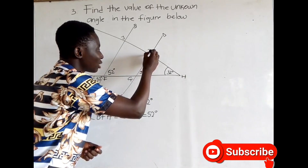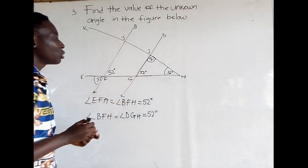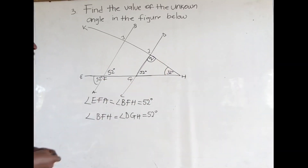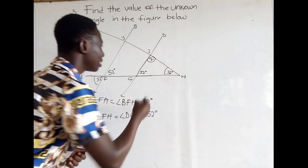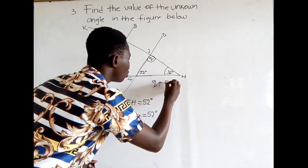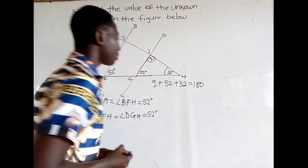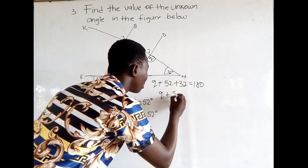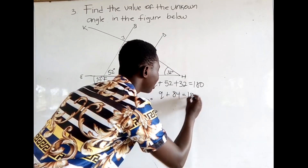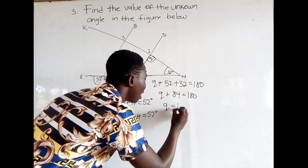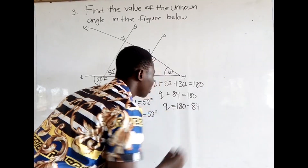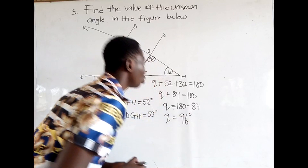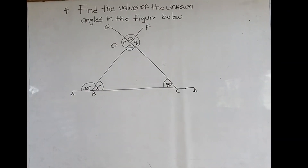What is left now forms a triangle. One property of a triangle is that the sum of the interior angles of a triangle sums up to 180. So we add all angles and equate to 180. We get q plus 52 plus 32 is equal to 180. 52 plus 32 gives us 84. So q is equal to 180 minus 84, giving us q is equal to 96 degrees.